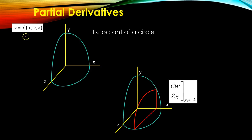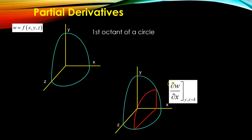So what are partial derivatives? Take this for example. If you have a function w, which is a function of x, y, and z, you have here on a three-dimensional axis x, y, and z — you have a surface here. Let's just say this is one-eighth of a circle. If I ask you to solve for the partial of w with respect to x, that means you have to solve for the derivative of the function taking only x as a variable, meaning that y and z should be treated as constant.